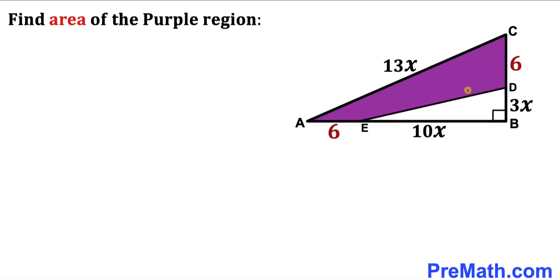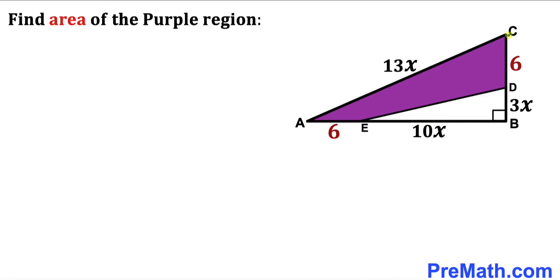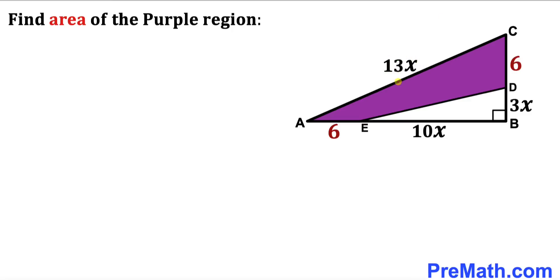Welcome to pre-math. In this video we have got a right triangle ABC such that segment AE is 6 units, segment EB is represented by 10 times x, vertical segment CD is 6 units, segment BD is represented by 3 times x, and side length AC of this triangle is 13 times x. Our task is to calculate the area of the purple shaded region.